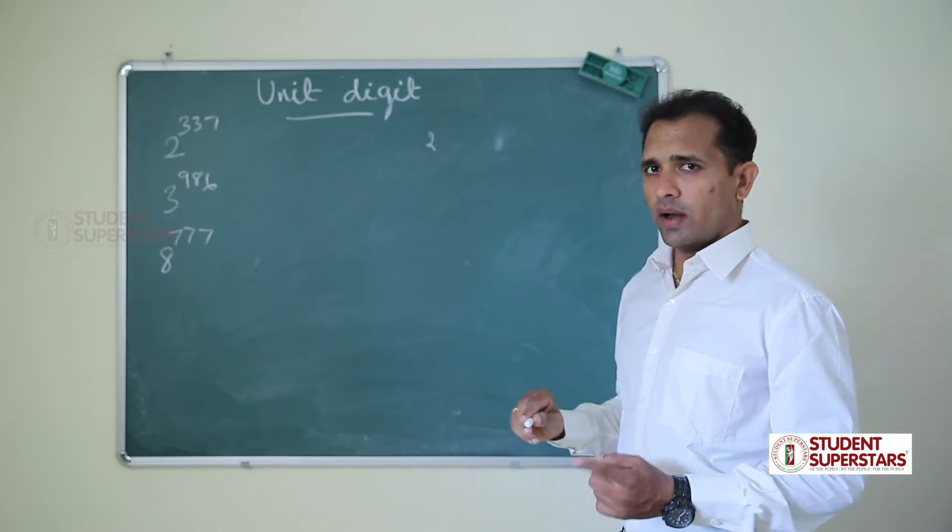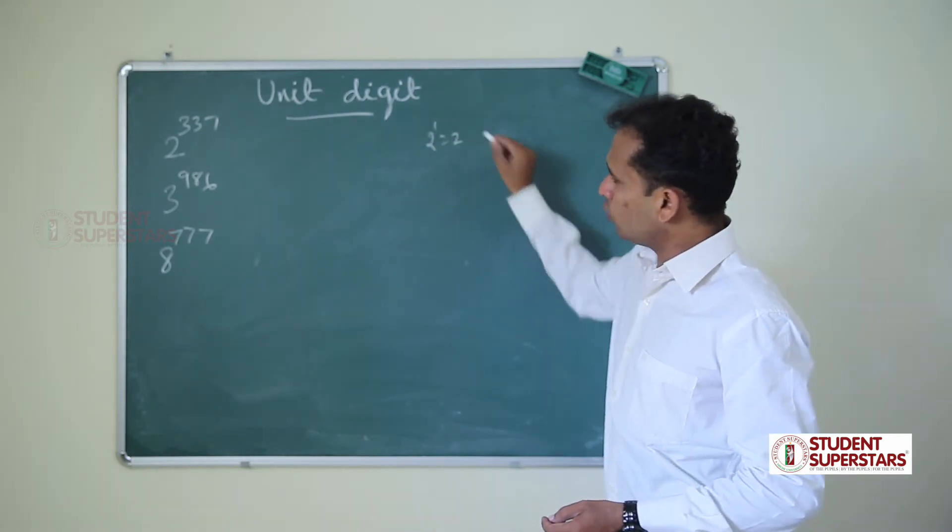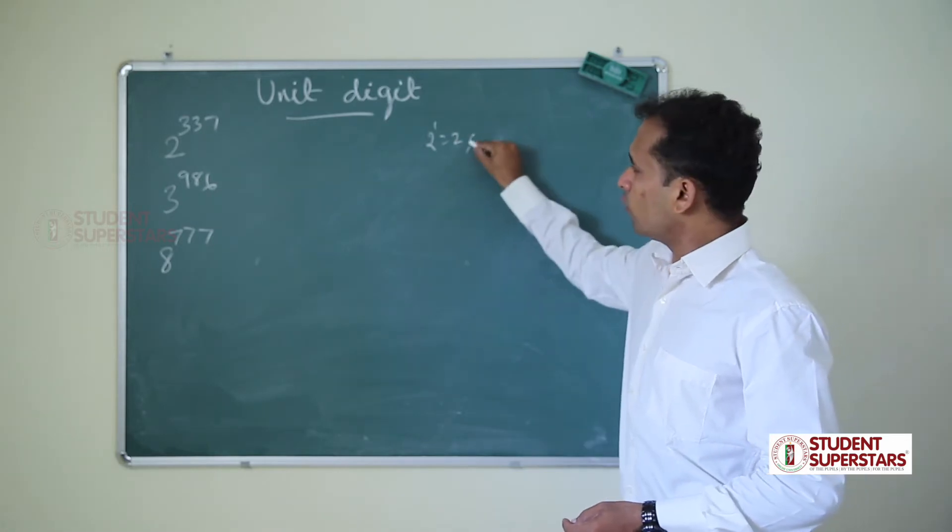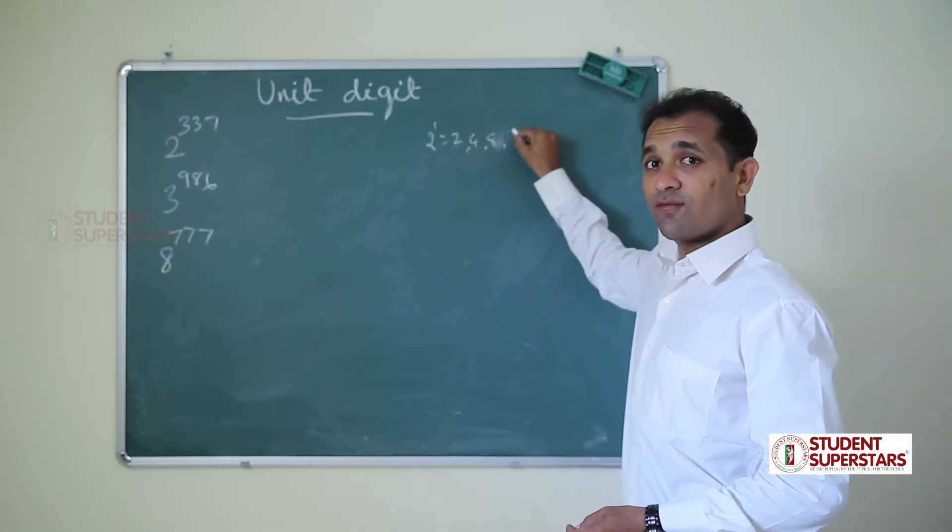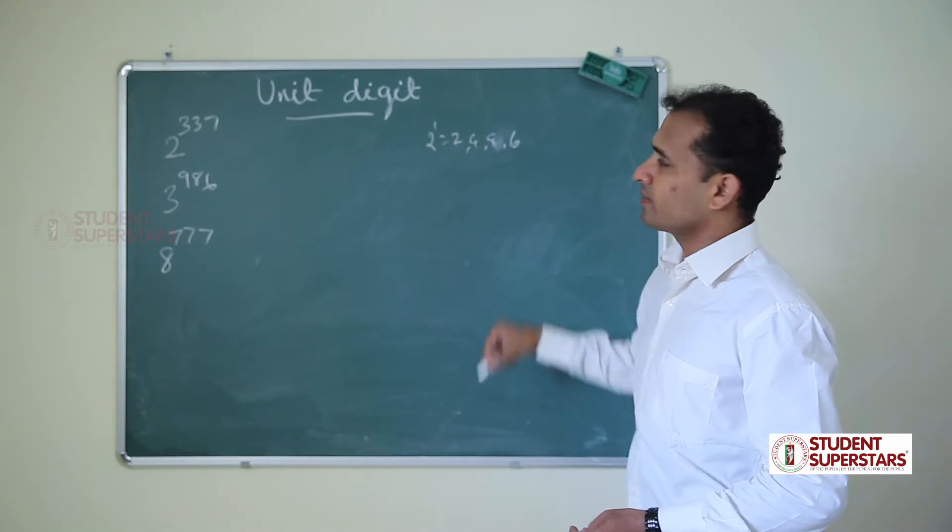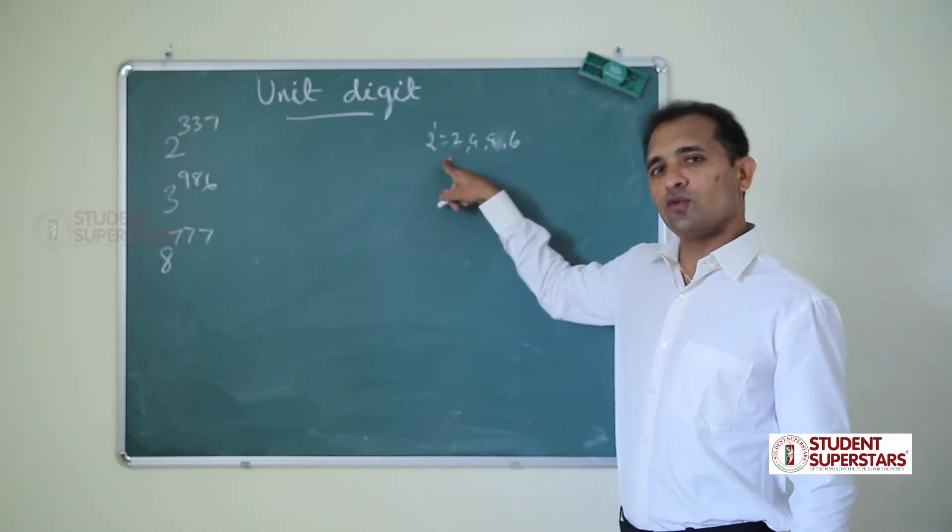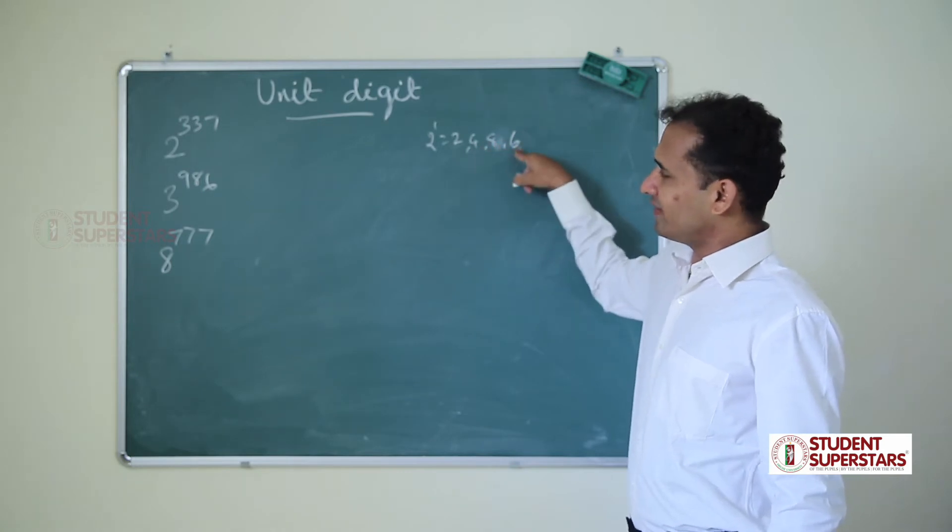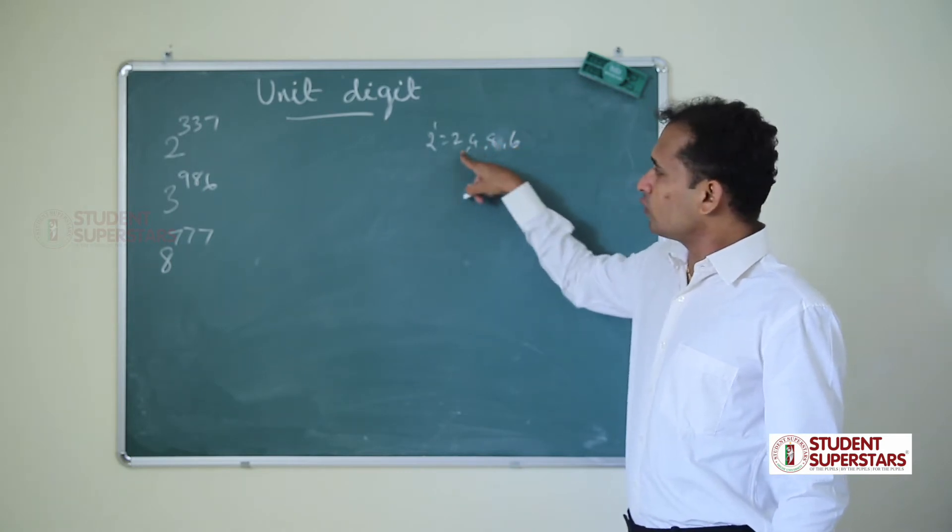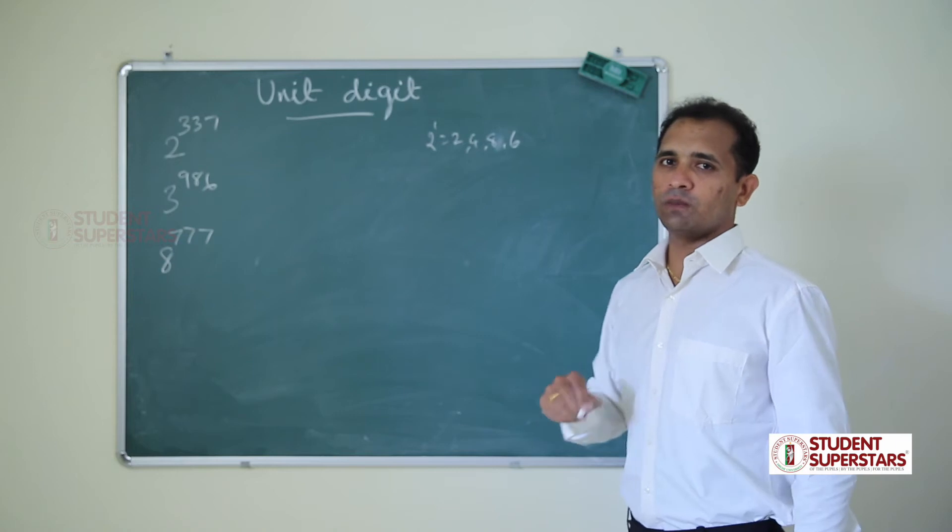2 power 1 is 2, 2 power 2 is 4, 2 power 3 is 8, 2 power 4 is 16 so 6. Then 2 power 5, 6 into 2 is 12, so 2. Again 4, 8, 6. So the power cycle is 2, 4, 8, 6 for 2.